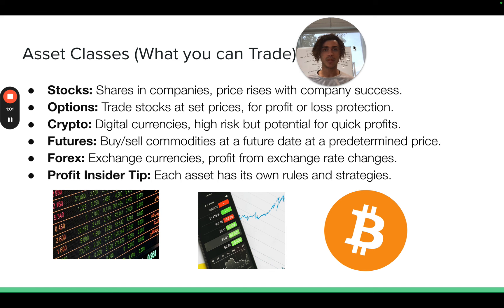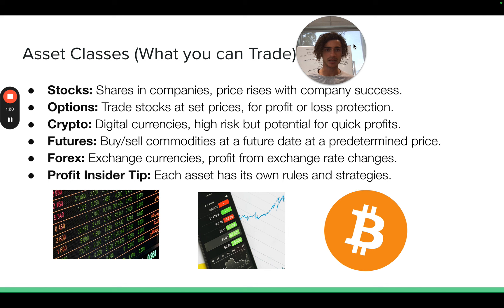You could trade Tesla, which has done very well, or NVIDIA — NVIDIA is an AI chip company. We have some premium members that have been making a ton of money trading NVIDIA. So that's the first thing: stocks are a company. Most of the stocks we trade, you've heard of. The S&P 500 is also a stock — it's an ETF, a collection of different stocks, but it would also be classified as a stock. So that's one thing we trade.